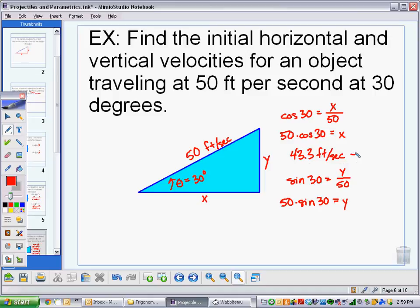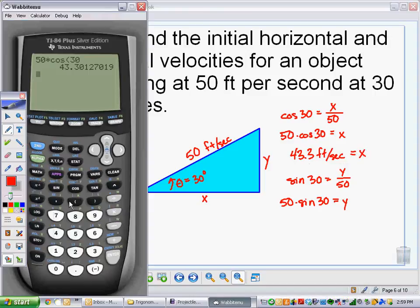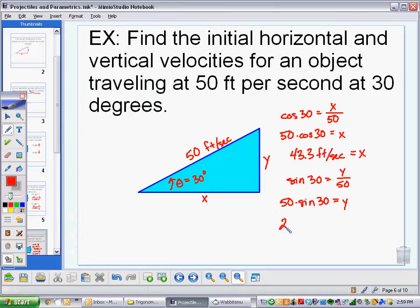Feet per second is how fast it's traveling horizontally. And then vertically, we have 50 times the sine of 30, which comes out to 25. So we get 25 feet per second in the Y direction. So this is traveling much faster horizontally than it is vertically.